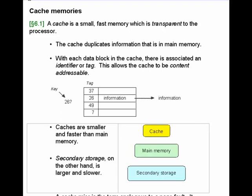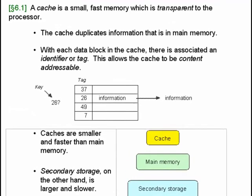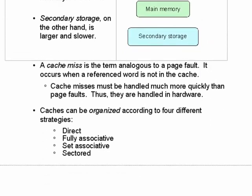Caches are smaller and faster than main memory. Secondary storage on the other end of the spectrum is larger and slower than main memory. So you get what you pay for — if you have a fast memory, it has to be small; if you want a large memory, it has to be relatively slow.